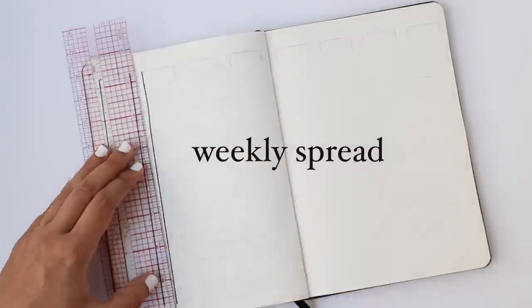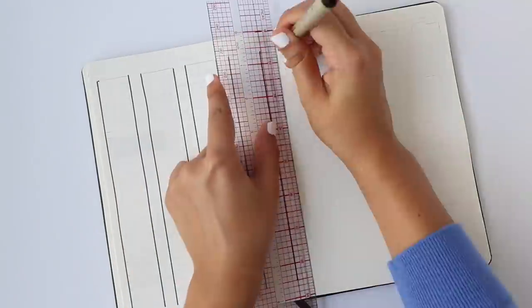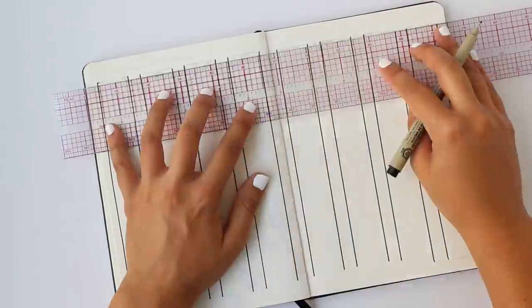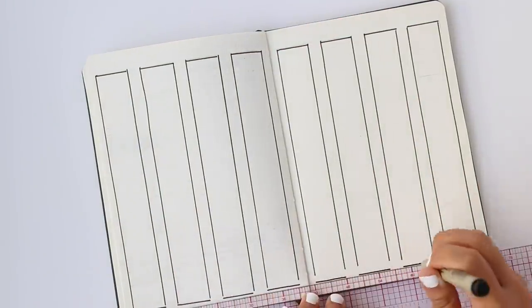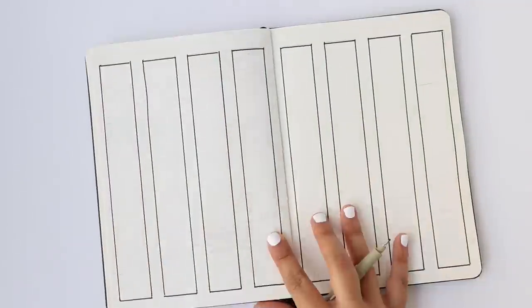The weekly spread is one of my favorite spreads to put together and because of that I am giving you not one but two weekly spread ideas. They both incorporate the exact same things but they are laid out very differently. This first weekly spread is very vertical as you can tell by the fact that I just made eight very long columns.